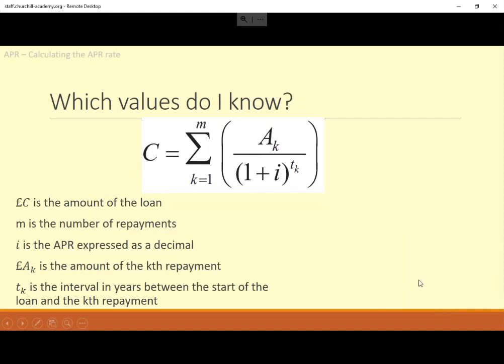The amount of the loan C was £22,000. M is the number of repayments. Well, there's only one repayment. I is the APR expressed as a decimal and that's the thing we don't know. The amount of the Kth repayment, well, there's only one repayment and we know what it was. It was £26,200.